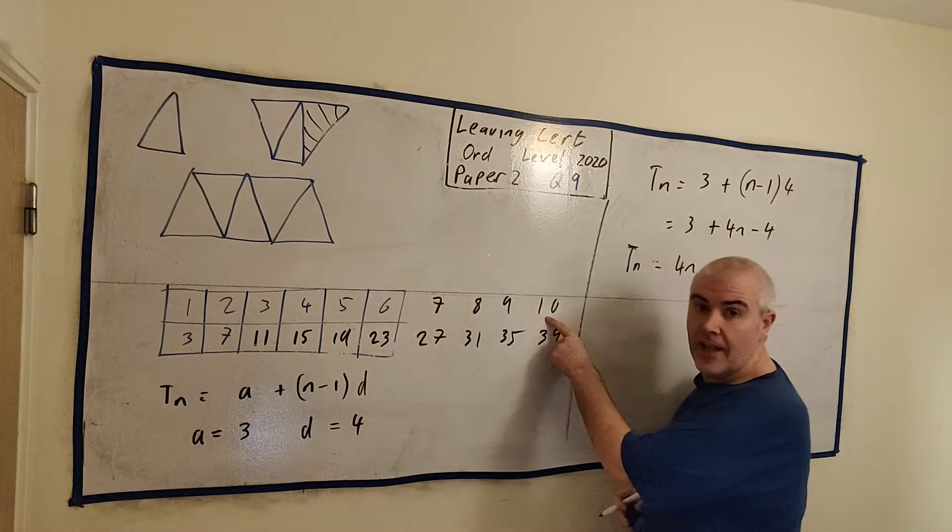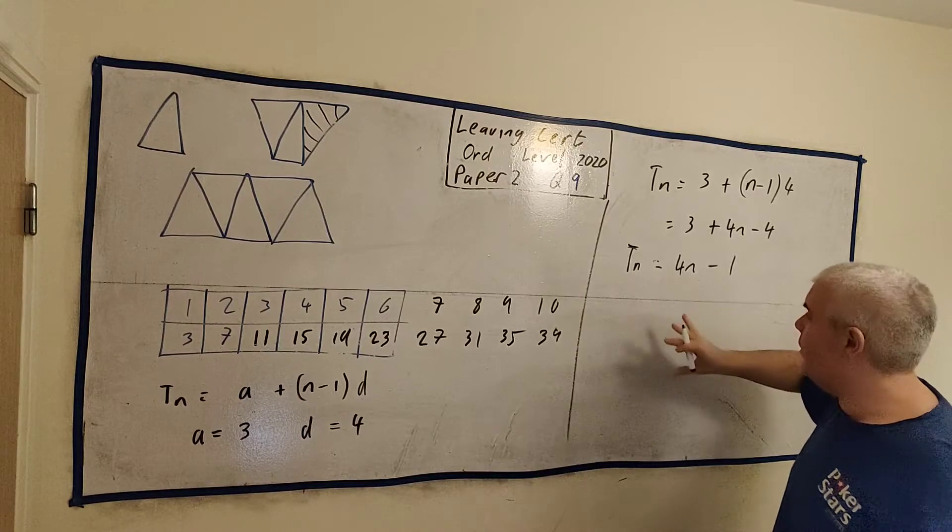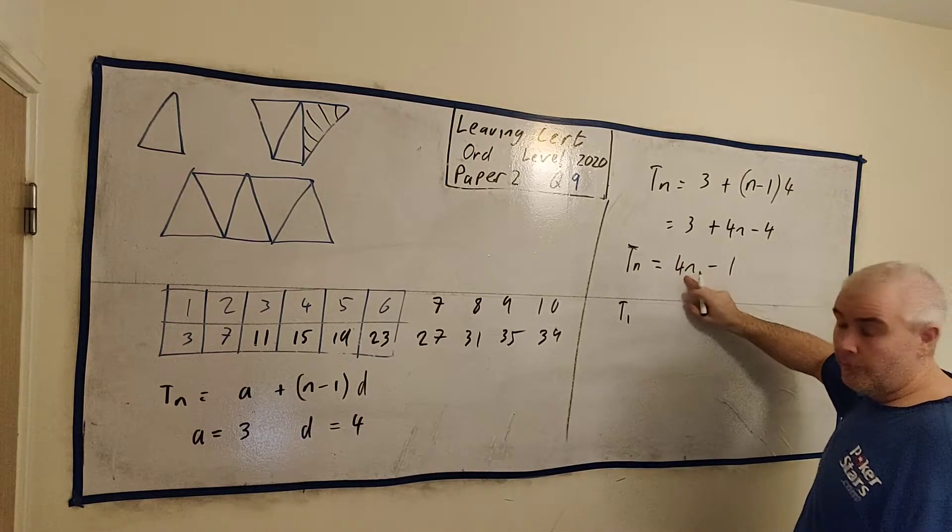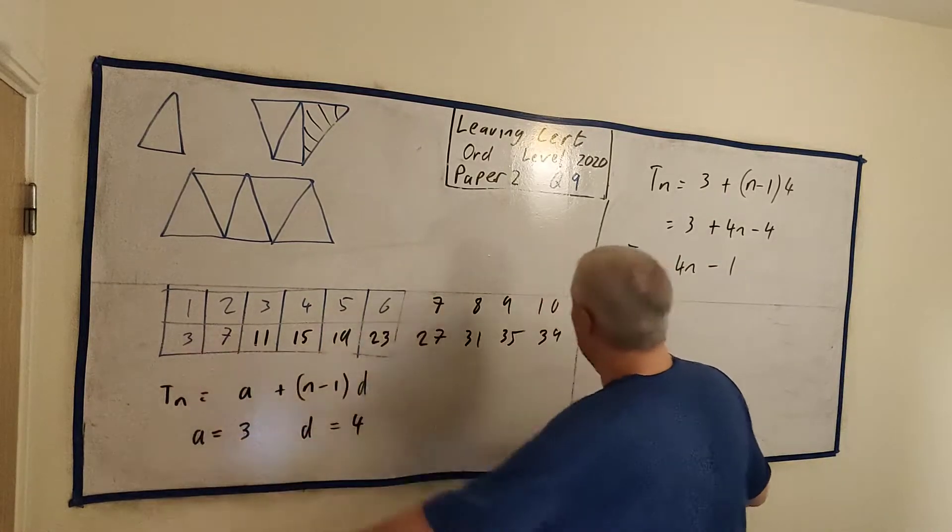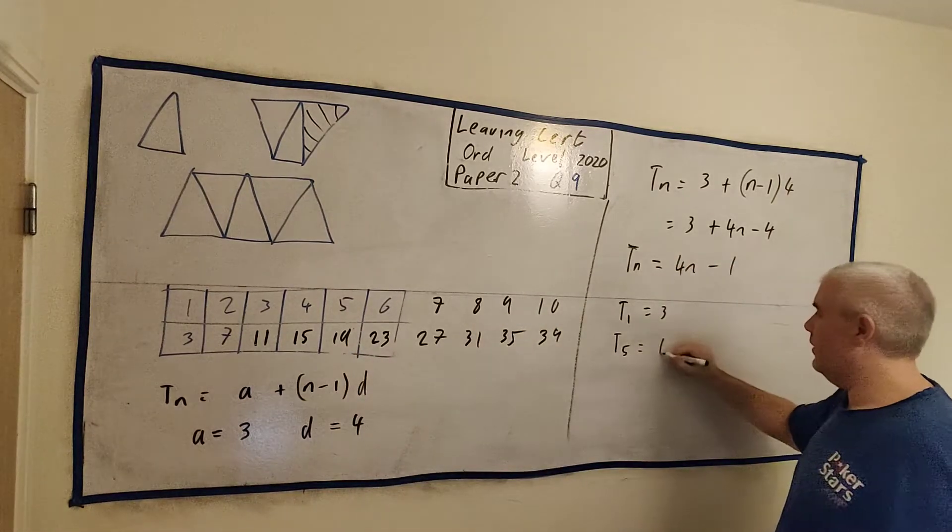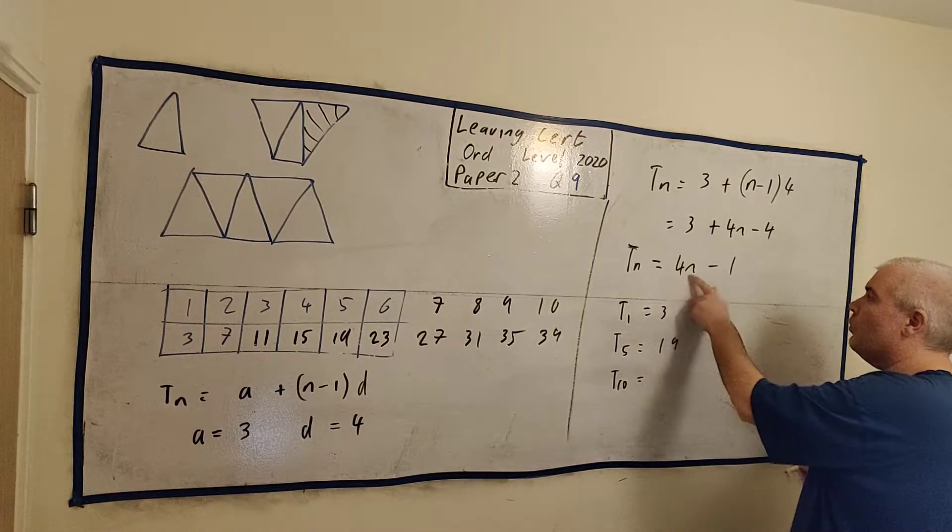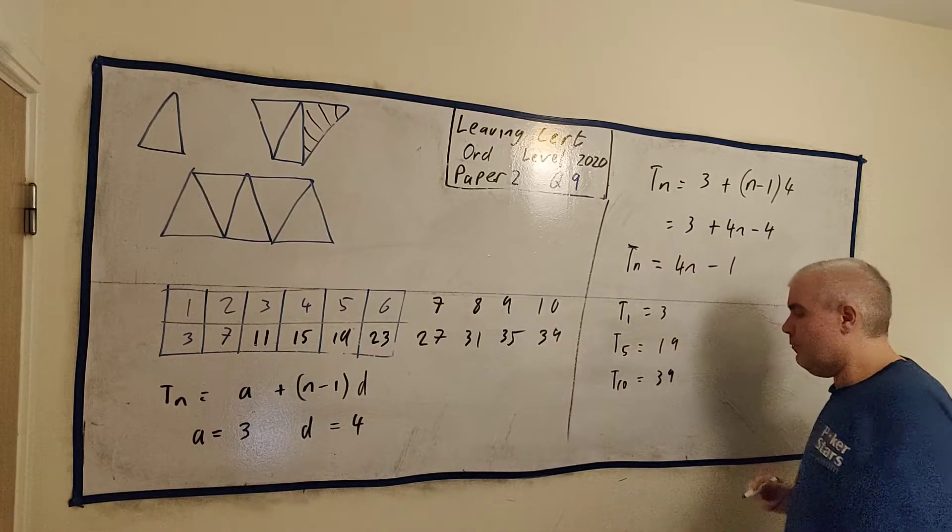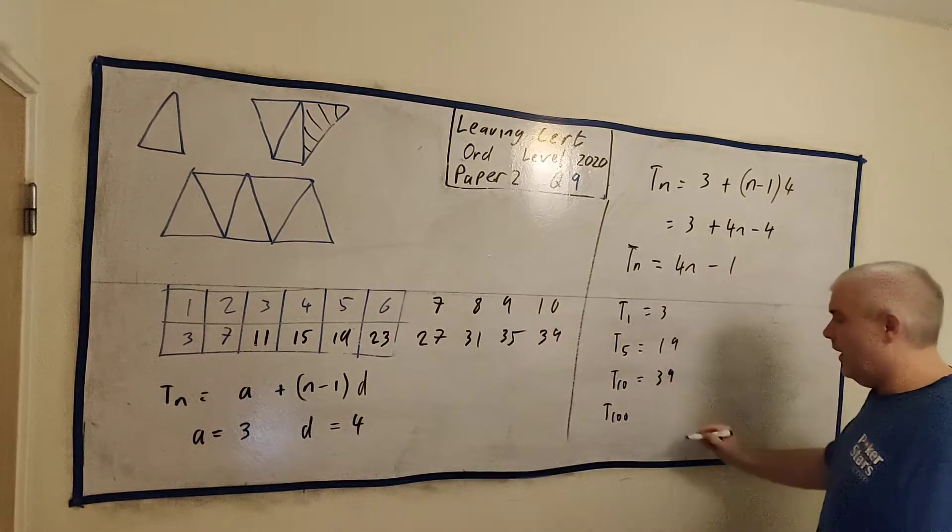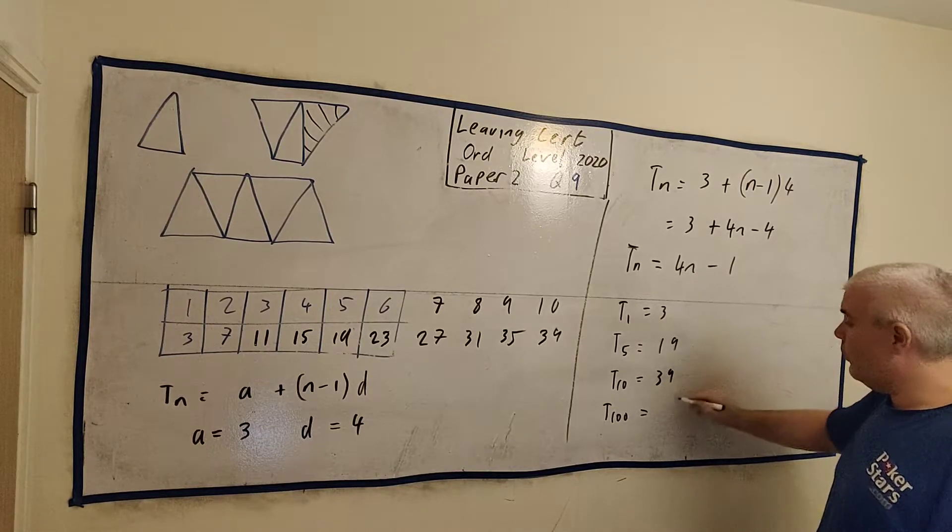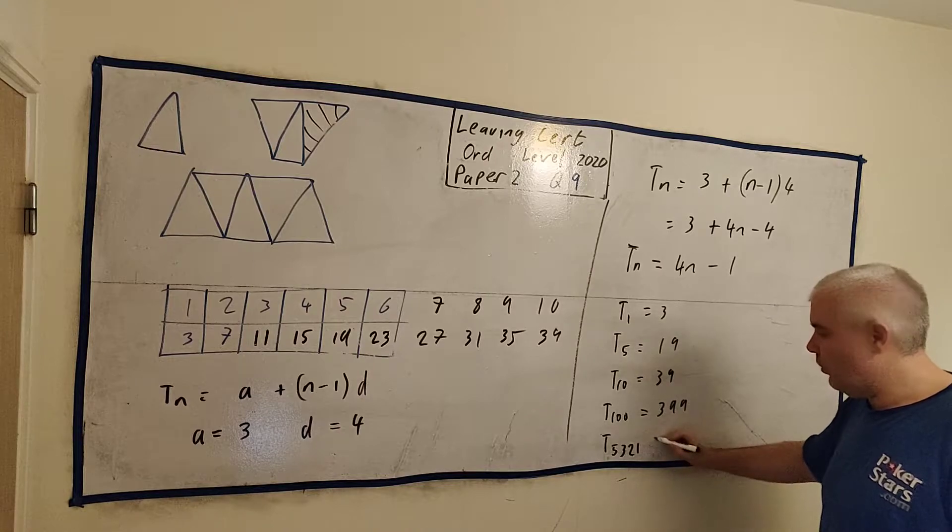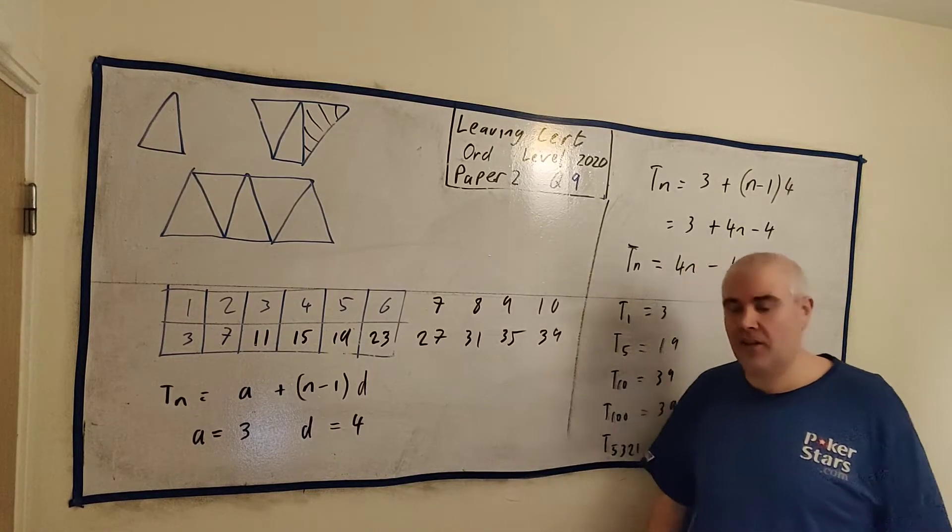TN tells us everything. Put whatever number you want in for N. T1, for example, 4 times 1 minus 1 is 3. We knew this already. Let's try a couple more. T5, 5 times 4 is 20, minus 1 is 19. Yes, that's good. T10, the one they asked us to get, would be 40 minus 1 is 39. And let's do T100. Something we would never have done without this. We wouldn't have sat here adding up numbers. But now we can quite easily say 100 times 4 is 400 minus 1 is 399.